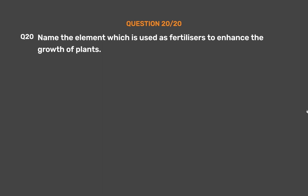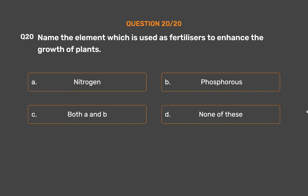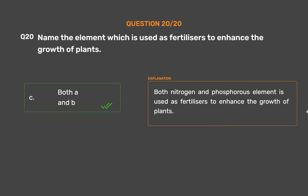Question number 20. Name the element which is used as fertilizer to enhance the growth of plants. Option A: Nitrogen. Option B: Phosphorus. Option C: Both A and B. Option D: None of these. The correct answer is Option C: Both A and B. Both nitrogen and phosphorus are used as fertilizers to enhance the growth of plants.